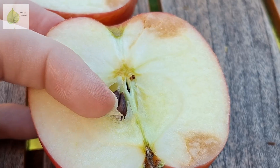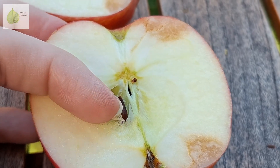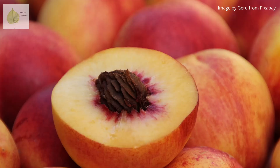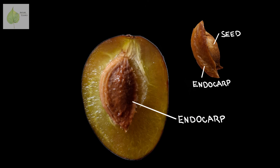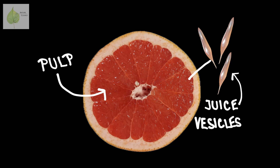In apples or pears, the endocarp comes in the form of a leathery membrane. In stone fruits like peaches, cherries, or this plum, the endocarp is hard, forming a stone or a pit. The seed is hiding inside, and we can reveal it when we break the endocarp open. In citrus fruits, the endocarp is the juicy colorful part filled with juice vesicles, which are actually modified hairs that come from the endocarp.